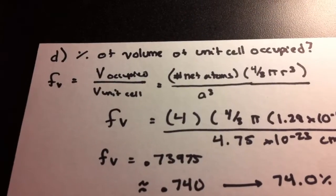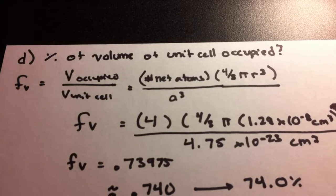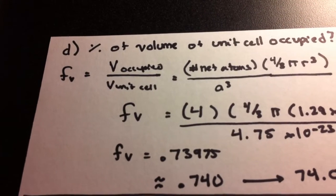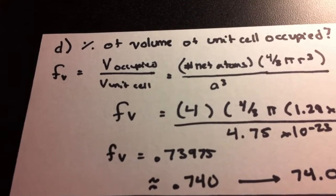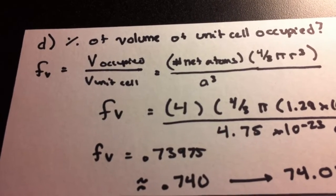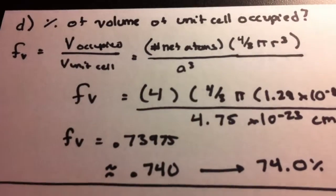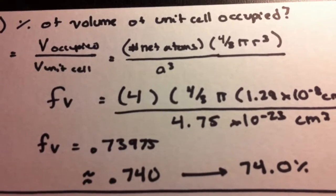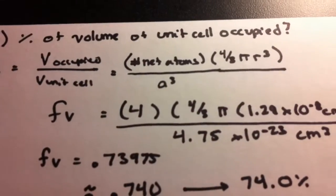Next, we want to find the percentage of volume of unit cell occupied. Now, that's going to be represented by Fv. So we want to find the volume occupied over the volume of the unit cell. And we already calculated the volume of the unit cell, a cubed, earlier.